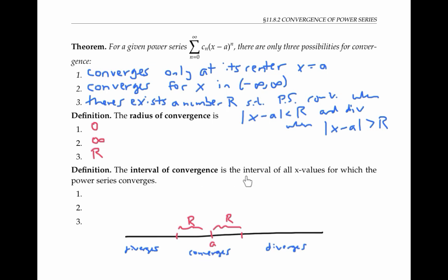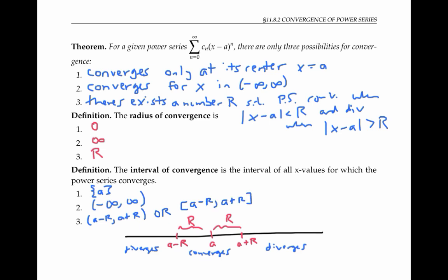The interval of convergence is the interval of all x values for which the power series converges. In the first situation, the interval of convergence is just the single number a. In the second situation, it's the interval from negative infinity to infinity. In the third situation, the interval extends from a − r to a + r, so it could be the open interval (a−r, a+r), but it could also include one or more endpoints — so it could be the closed interval, or include just the left endpoint, or just the right endpoint.